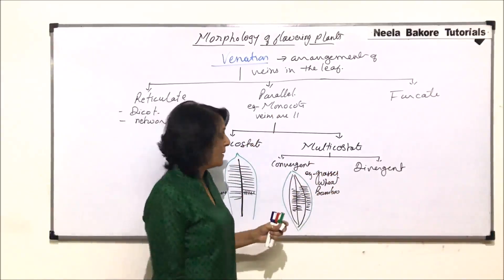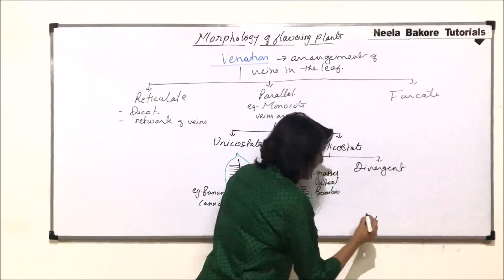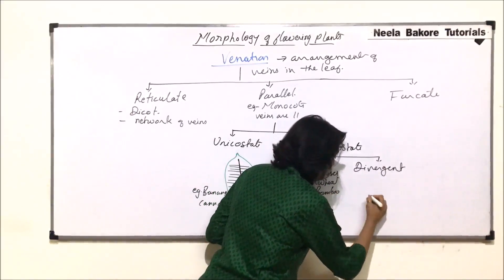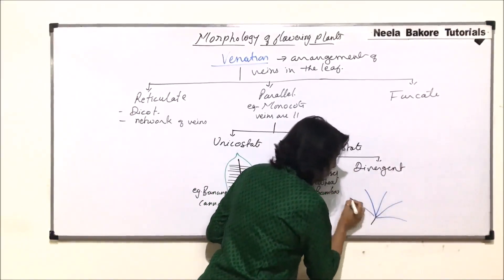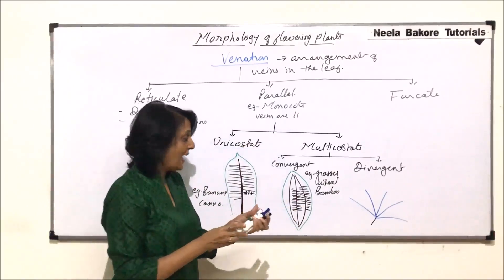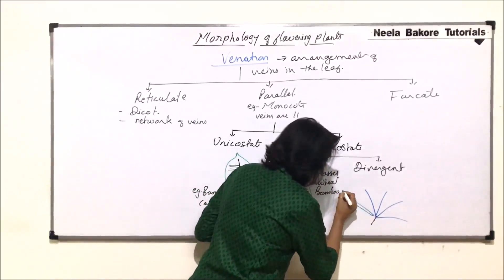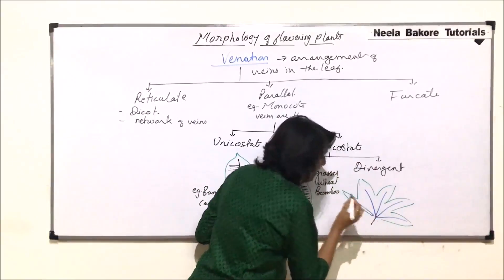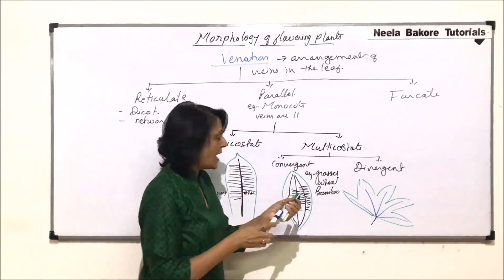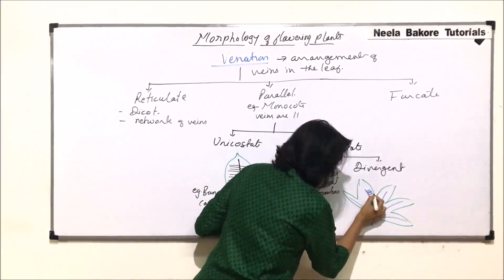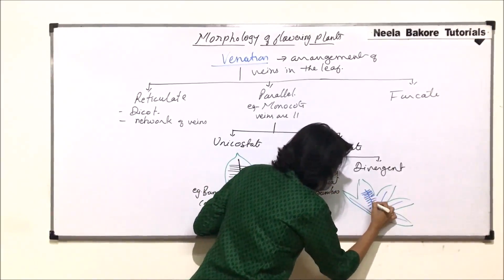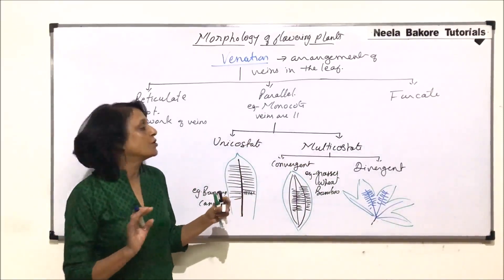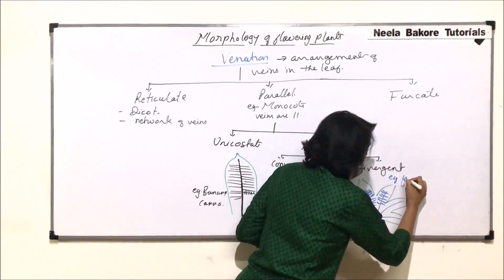In the divergent type, there are multiple main veins but they all are going in different directions, showing divergence. These are the main veins, and coming to the arrangement of the branches — the branches are going to be parallel. So again, no network, but there are many main veins going in different directions. The example of this is fan palm.